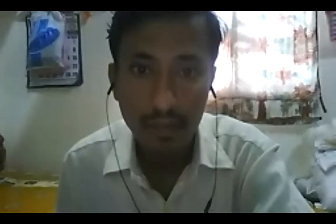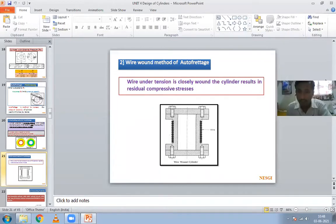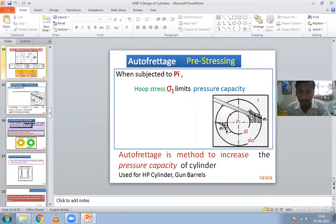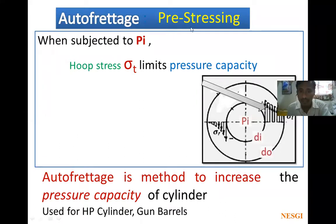In cylinders also, the same concept is used. There are different methods by which we can increase the capacity of cylinders. Increasing the capacity of cylinders by inducing stresses in the cylinders is called autofrettage. This is called pre-stressing — before I am going to use that particular cylinder, I am going to induce some stresses in that cylinder.